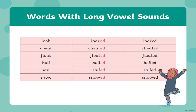Here we have the first part. As you can see, we have three different columns. In column number one, we have the verb in present: look, cheat, float, boil, sail, and snow. In the second column, we have the suffix '-ed', which helps us transform these regular verbs. The past forms are: looked, cheated, floated, boiled, sailed, snowed.